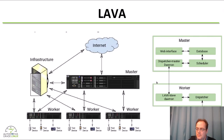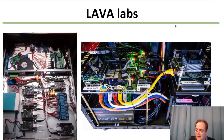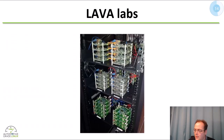The structure is: we host a LAVA master which has the web UI and distributes the jobs, we have workers with the devices under test attached, and there can be multiple workers. In reality, things can look like this: on one side you have a set of devices under test with power control, serial, and network. The worker node is provided by something like a MinnowBoard, or in a larger setup you have a rack with multiple devices under test stacked.